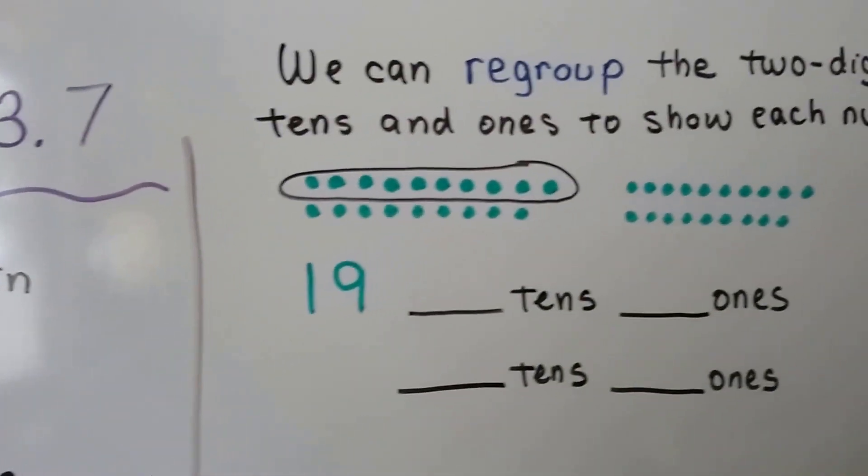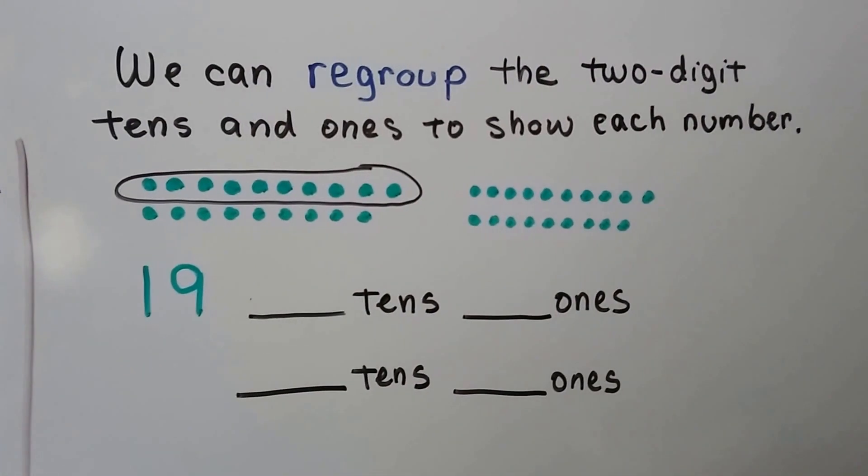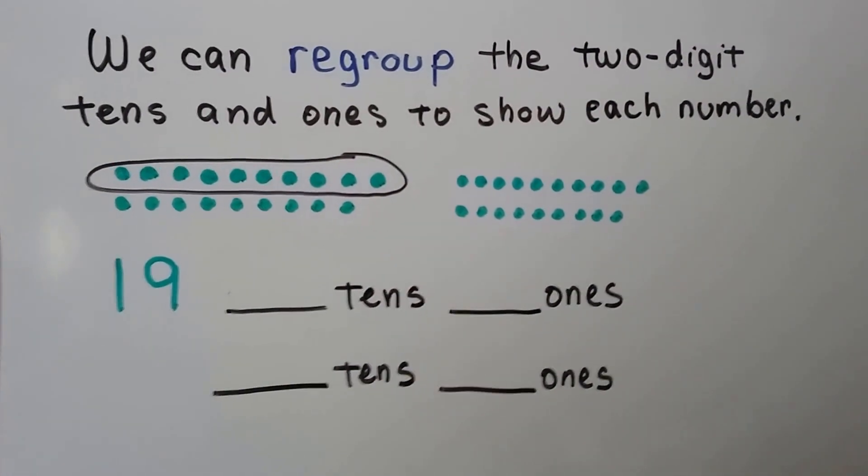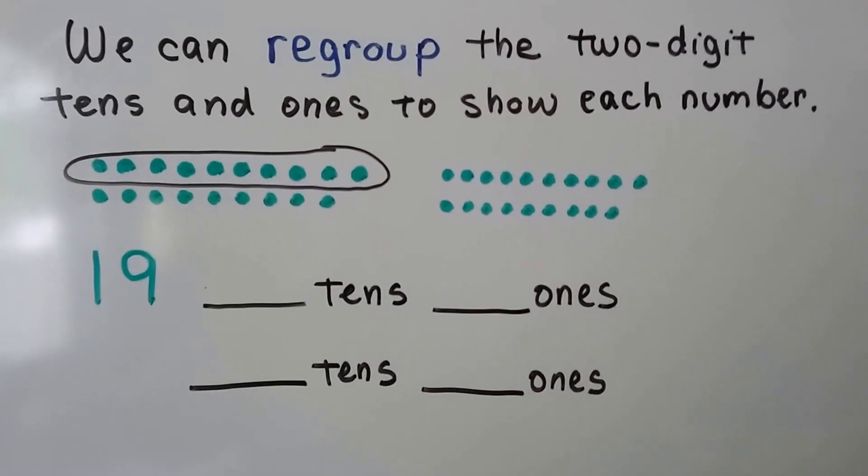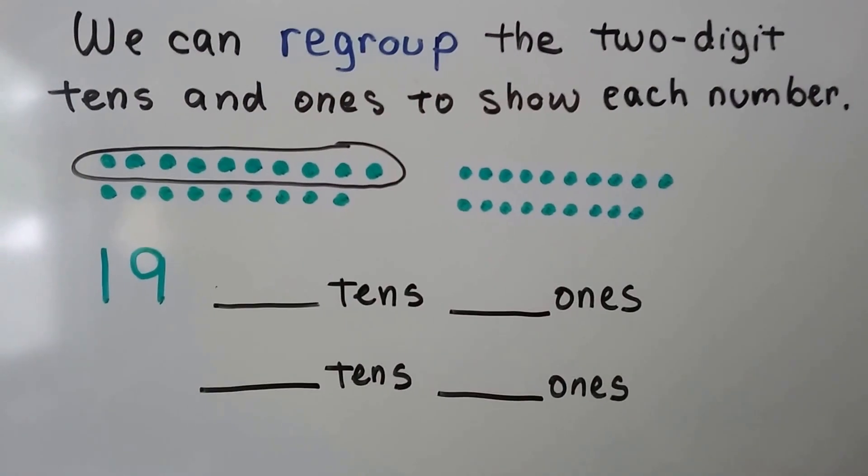We can regroup the two-digit tens and ones to show each number. For 19, we can show one group of 10.